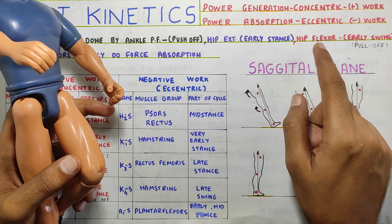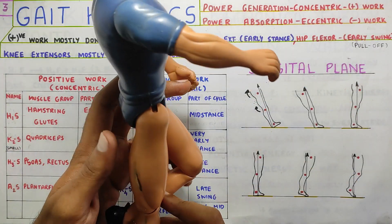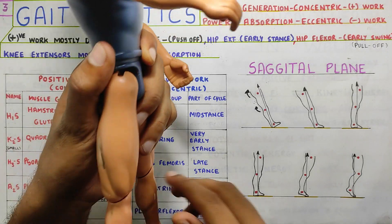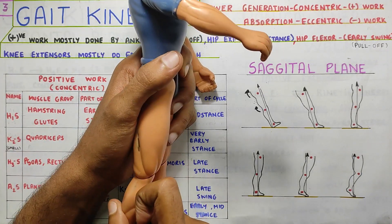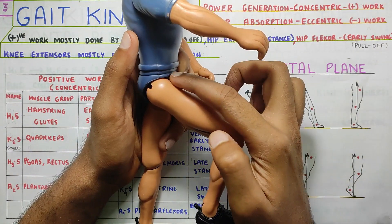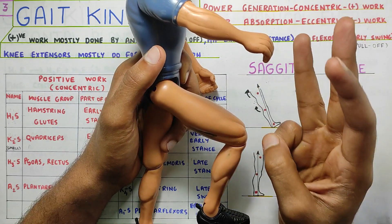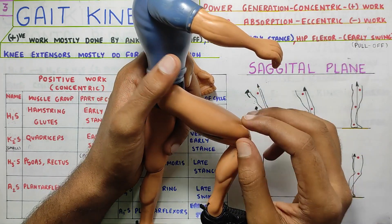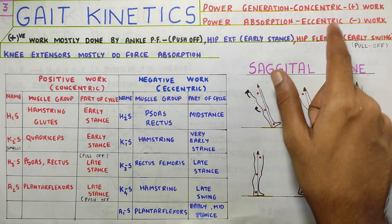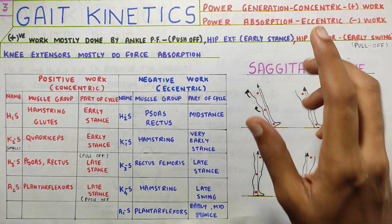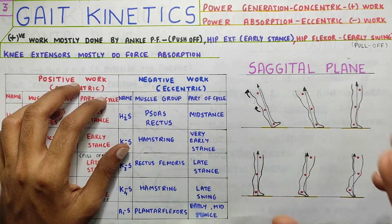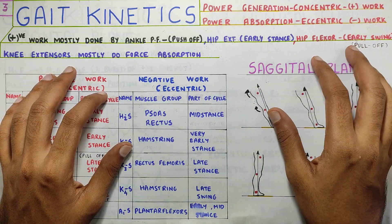Hip flexion also occurs during the swing phase — specifically during early swing when you are swinging your leg forward. Your hip flexion is happening and that is the third positive work. So these are the three main positive or concentric power generation events seen in the sagittal plane.